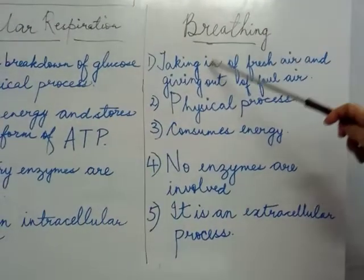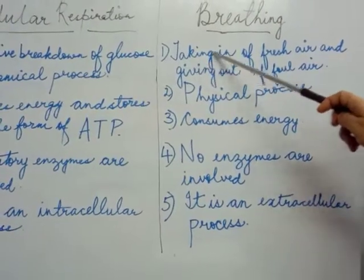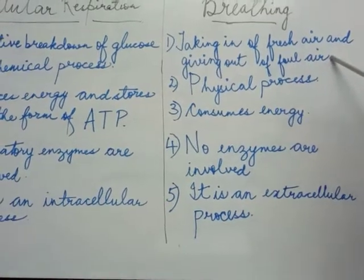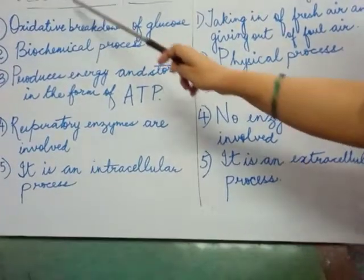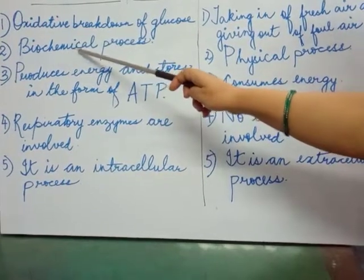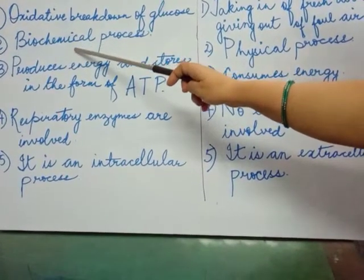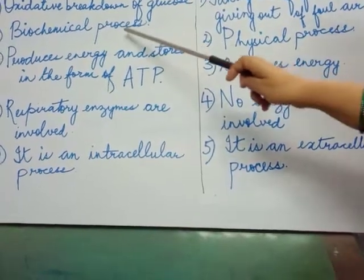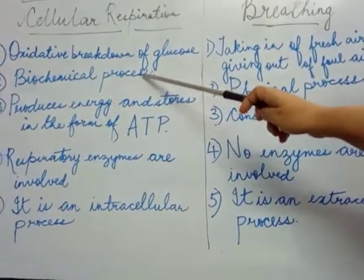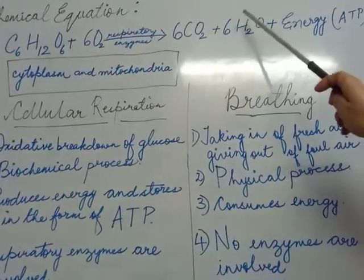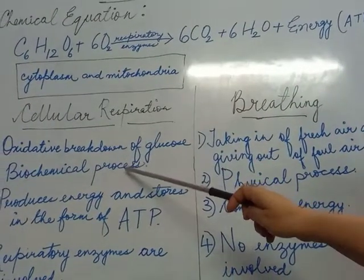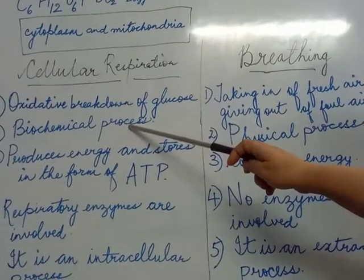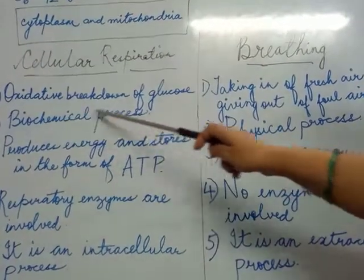Point number one for breathing: breathing is taking in fresh air and giving out foul air. Point number two: cellular respiration is a biochemical process. A chemical process which takes place inside the living body or living organism is called a biochemical process.